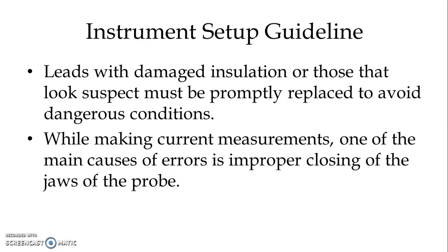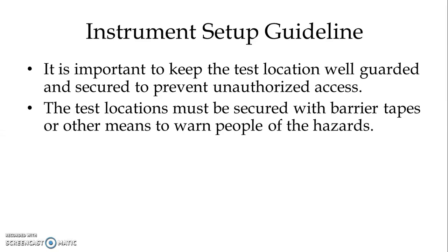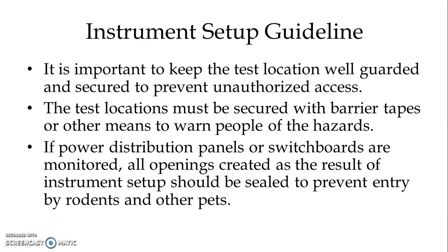While making current measurements, one of the main causes of error is improper closing of the jaws of the probe. Because of improper closing of the jaws, there might be an air gap in the current probe, giving results with certain errors. It is important to keep the test location well guarded and secured to prevent unauthorized access, using barrier tapes or other means to warn people of possible hazards. If power distribution panels or switchboards are monitored, all openings created as a result of instrument setup should be sealed to prevent entry by rodents and other pests.